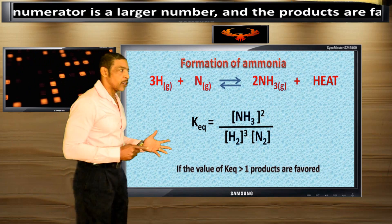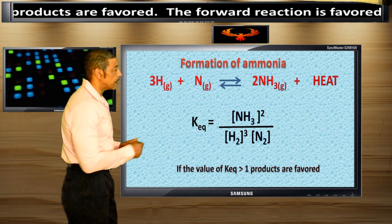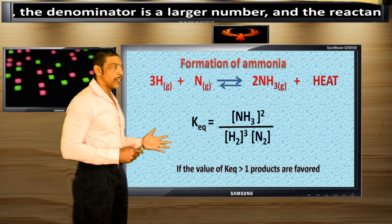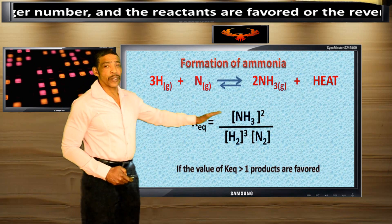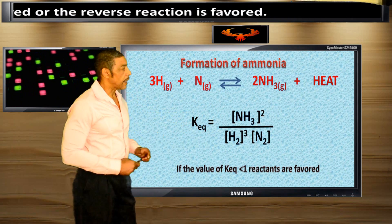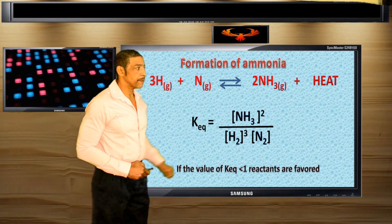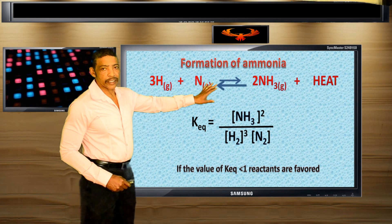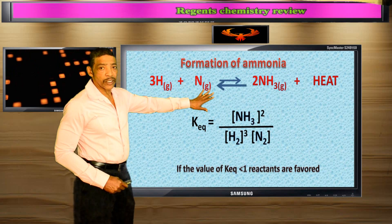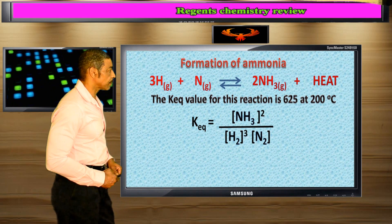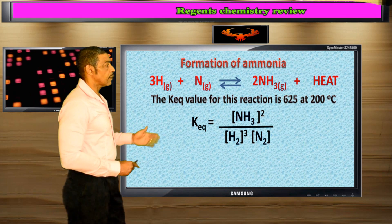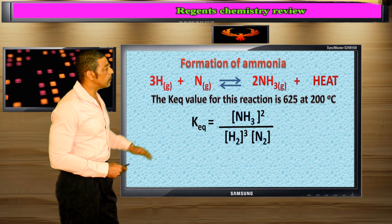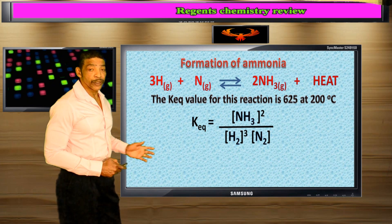The value of K-EQ will depend on the temperature of the reaction. If the temperature changes, the K-EQ value will change as well. If the value of K-EQ is greater than 1, then the numerator is larger than the denominator and the forward reaction will be favored. But if the K-EQ value is less than 1, then the reverse reaction is favored since the denominator will be a larger value than the numerator. Since the K-EQ value for this reaction is 625 at 200 degrees Celsius, it is the forward reaction that is favored in this particular case.